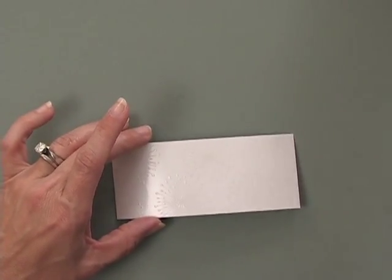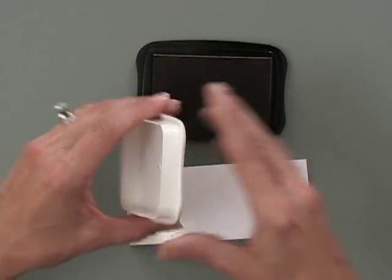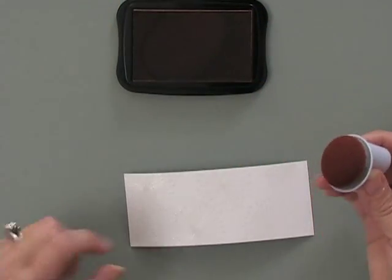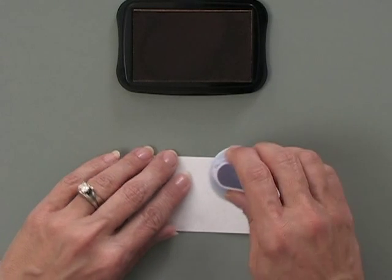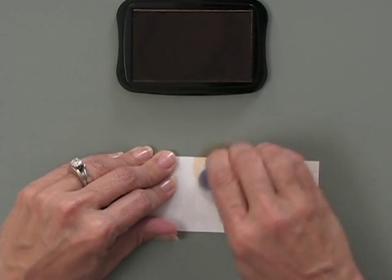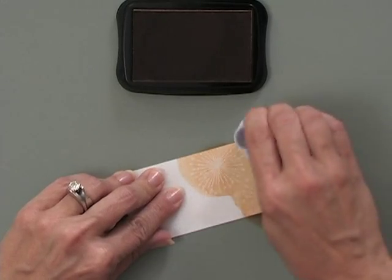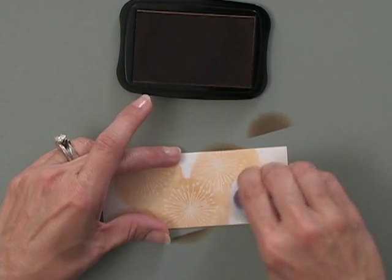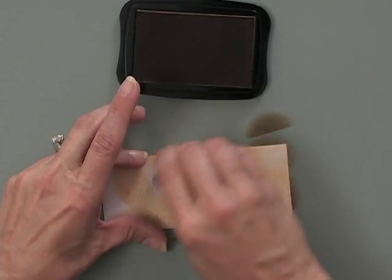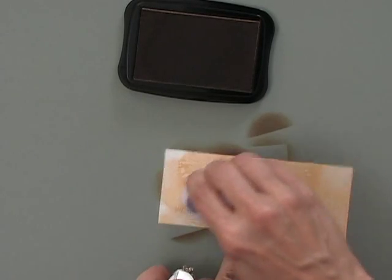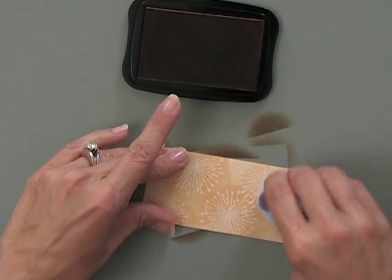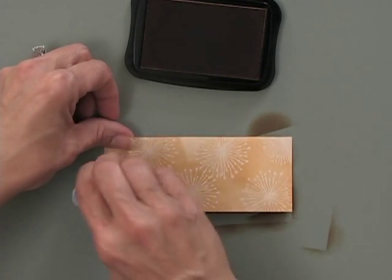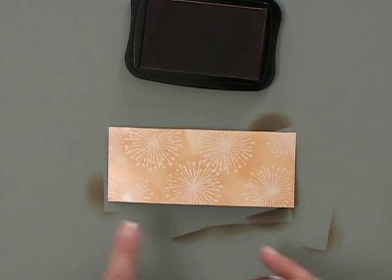So for my next step, I'm going to use some of the Peanut Brittle Memento ink and a sponge dauber. I'm going to ink up that sponge dauber and then right over these images, I'm going to begin to add color. The glossy cardstock is really nice because it gives you a little bit of work time before the ink dries completely. So you can go back over certain areas again. Now I've added some color there and you can see some of these dandelions peeking through.